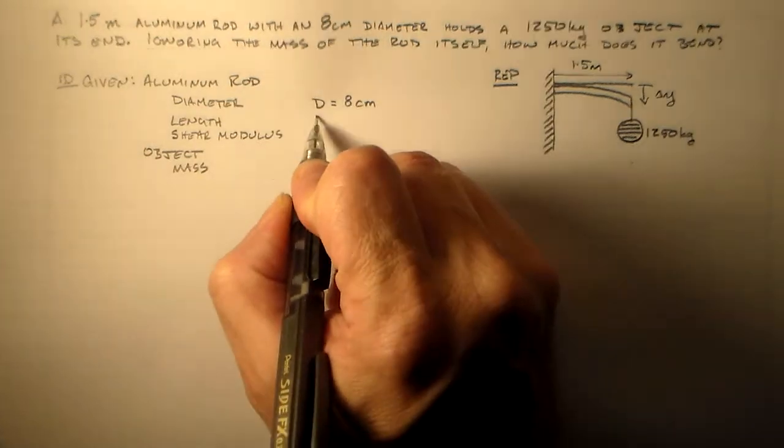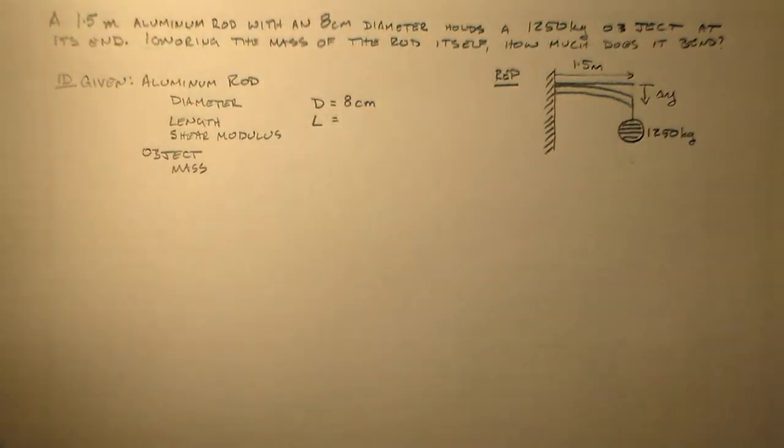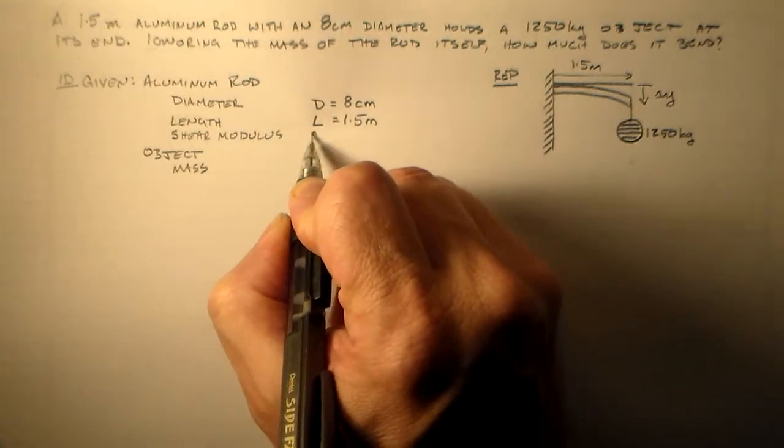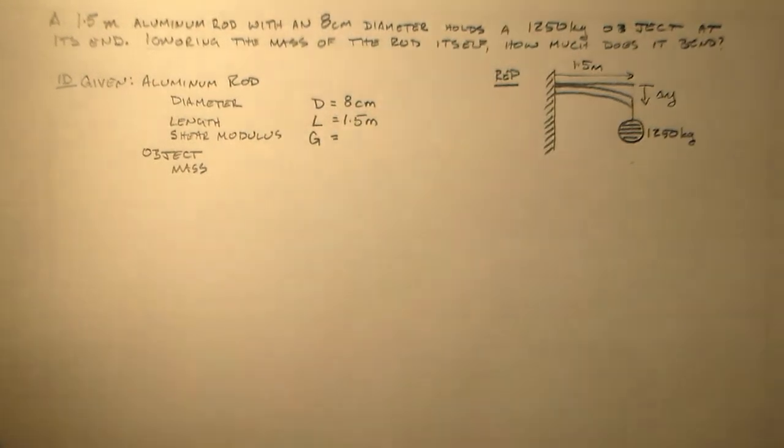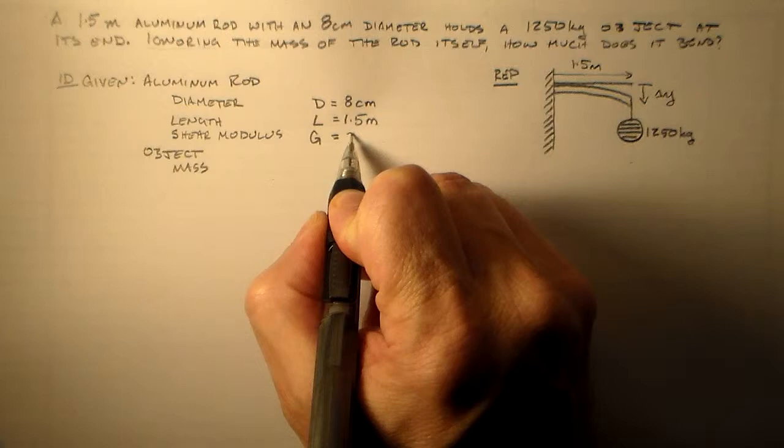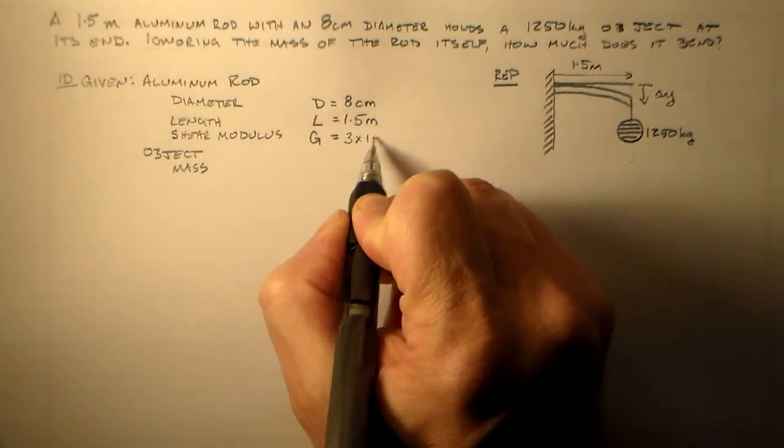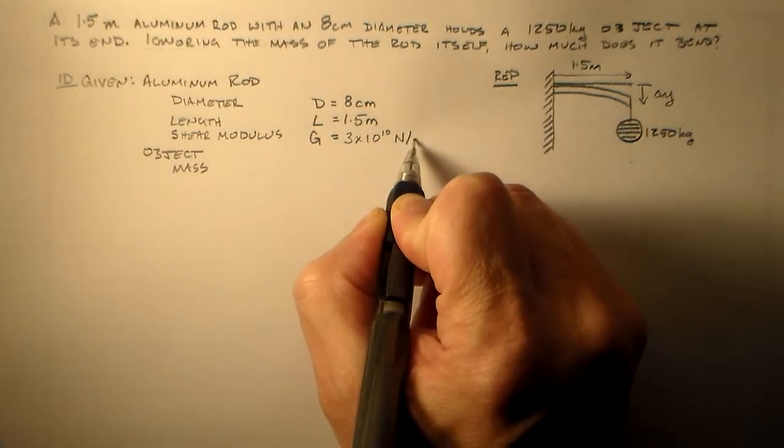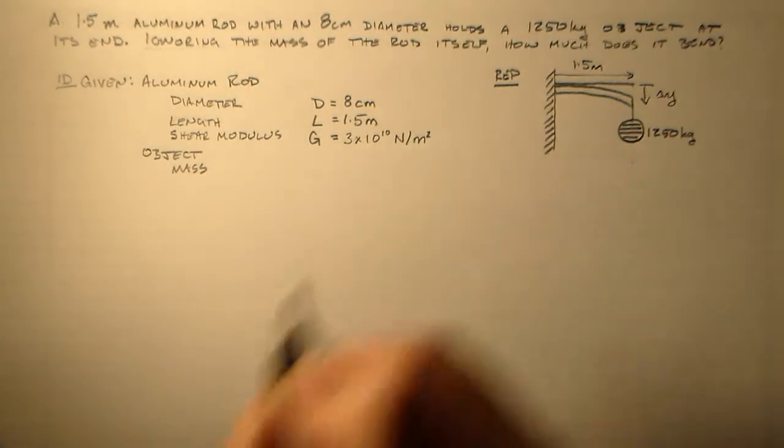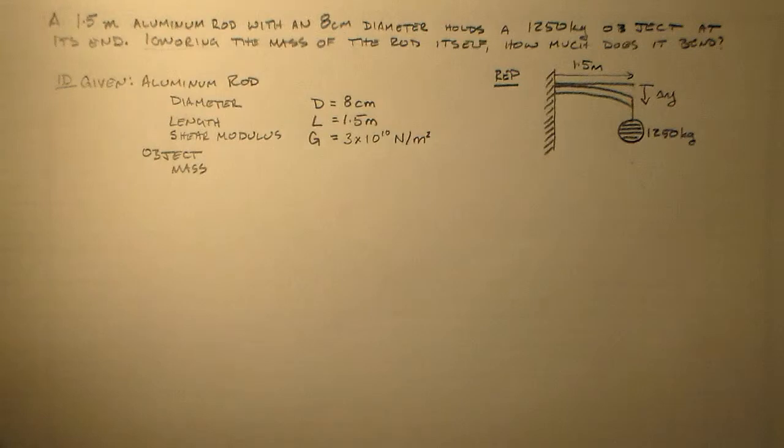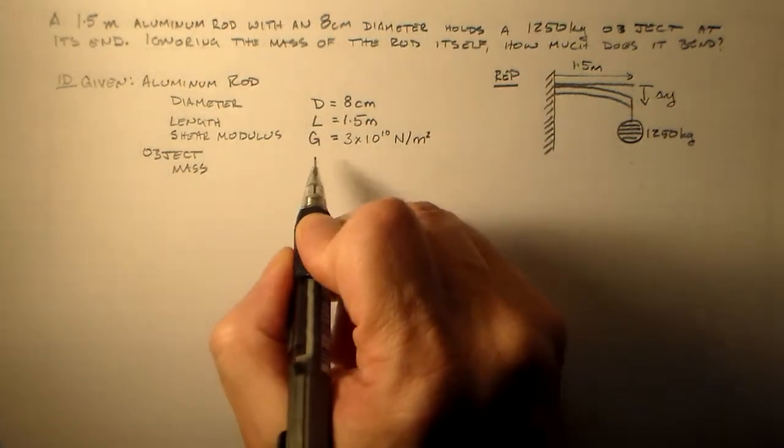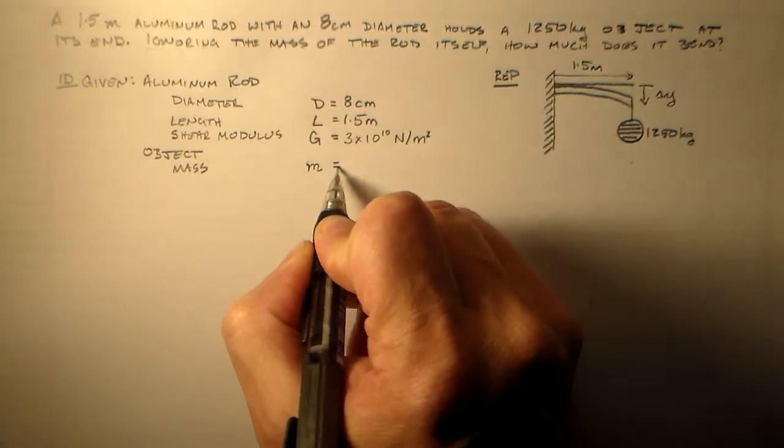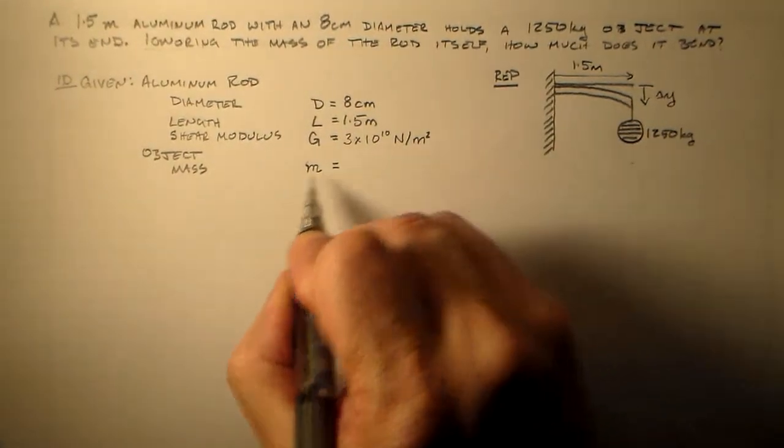We said it's 8 centimeters. The length is L, another wonderful letter. That's 1.5 meters. The shear modulus, we'll call that G because it makes a lot of sense to, no, that's because it's sort of an engineering practice. A lot of people call the shear modulus G.